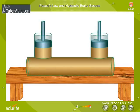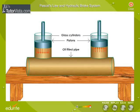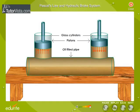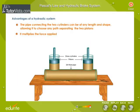Here you can see the simplest possible hydraulic system: two pistons are fitted into two glass cylinders filled with oil and connected to one another with an oil-filled pipe. If you apply a downward force on one of the pistons, then the force is transmitted to the second piston through the oil in the pipe. Since oil is incompressible, the efficiency is very good, and most of the applied force appears at the second piston. The advantage of hydraulic systems is that the pipe connecting the two cylinders can be of any length and shape, allowing it to connect any two separated pistons.